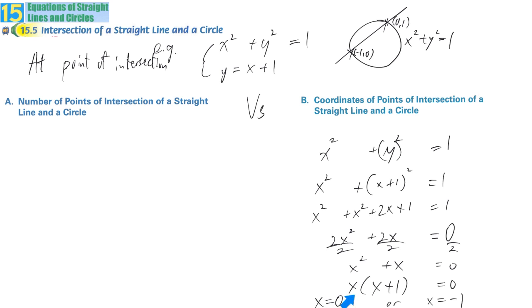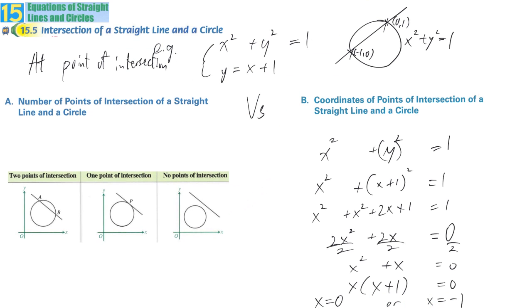But sometimes, maybe we don't need to know the exact position. We just want to know how many points of intersection. That means, are there two points, one point, or no points of intersection? In this case, it's easier to find out.